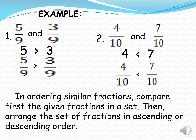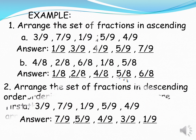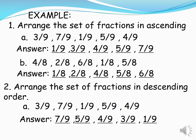In ordering similar fractions, compare first the given fractions in a set, then arrange them in ascending or descending order. Example number one, arrange in ascending order. Letter A: three ninths, seven ninths, one ninth, five ninths, four ninths. Answer: one ninth, three ninths, four ninths, five ninths, seven ninths. Letter B: four eighths, two eighths, six eighths, one eighth, five eighths. Arranged in ascending order: one eighth, two eighths, four eighths, five eighths, six eighths. Number two, arrange in descending order. Letter A: three ninths, seven ninths, one ninth, five ninths, four ninths. Answer: seven ninths, five ninths, four ninths, three ninths, one ninth.